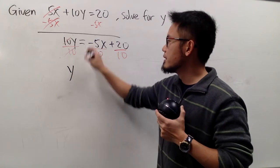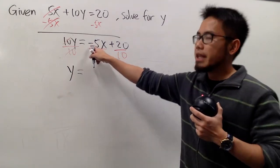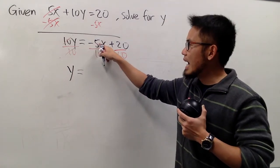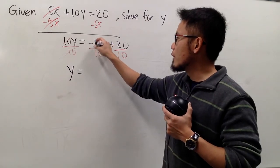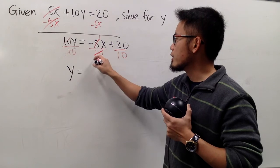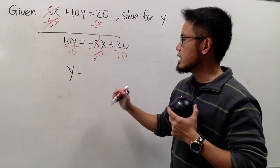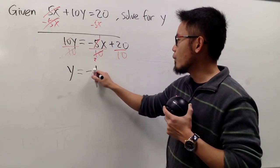Okay, now we have y by itself. This is equal to, here we have negative 5 over 10. We can reduce this fraction. 5 goes into 5 one time, and 5 goes into 10 twice. And this is still negative, so we will write down negative 1 half, like this.